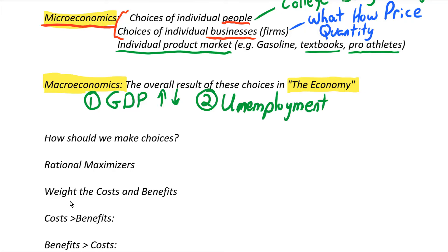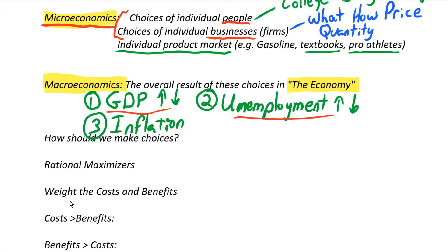Unemployment is basically what percentage of people in a country do not have a paying job but are actively looking for one. That's something you're very concerned with at the entire economy level — is unemployment going up or down? What's the relationship between unemployment and GDP? And what kinds of policies can a nation have to help GDP grow and unemployment go down? The third big topic in macroeconomics is inflation — when the overall average price of everything is going up, not just one thing. We want to understand what causes inflation, whether it's good or bad, and how we can deal with it.